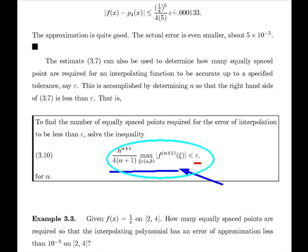And just below, you can see that we're looking at the function 1 over x on the interval 2 to 4. And we're saying how many equally spaced points are required so the interpolating polynomial has an error of approximation less than 10 to the minus 5th on that interval. So we're simply going to use this formula here. We're going to put in 10 to the minus 5th there and compute this general term and solve for the estimate on n. Now note h can be written in terms of n, as you will see.